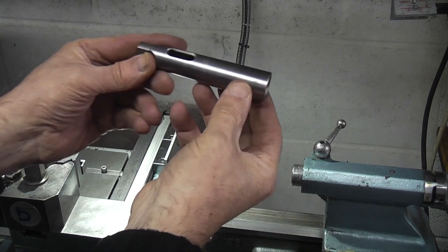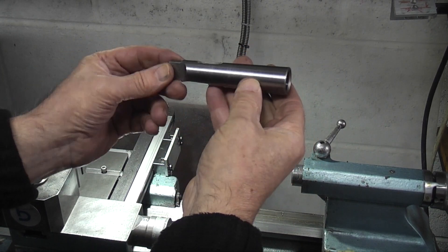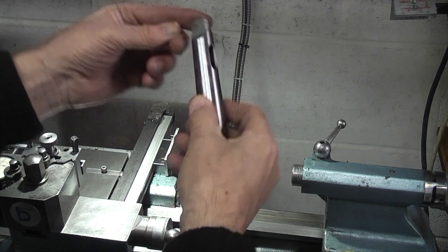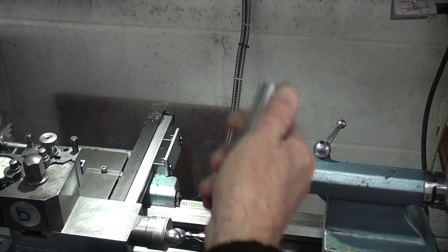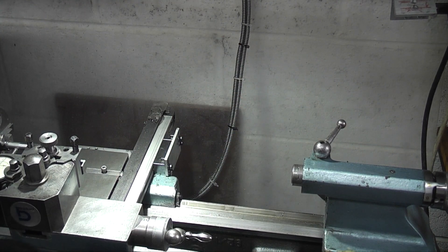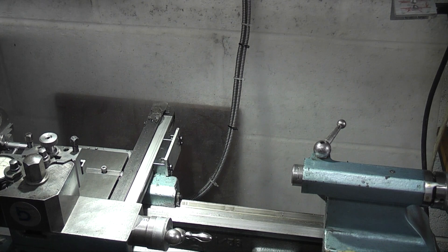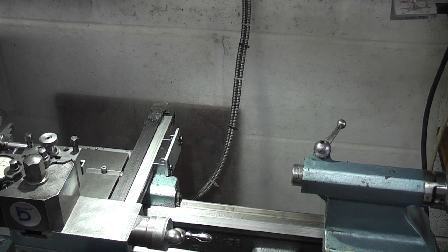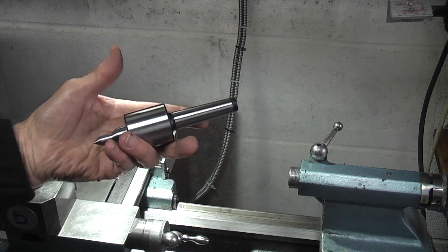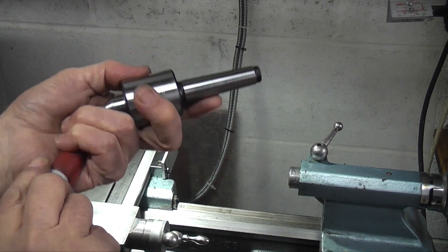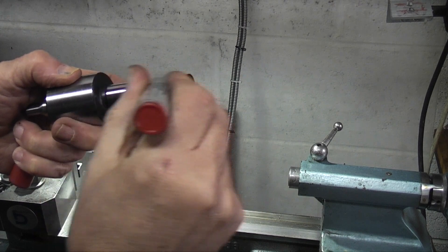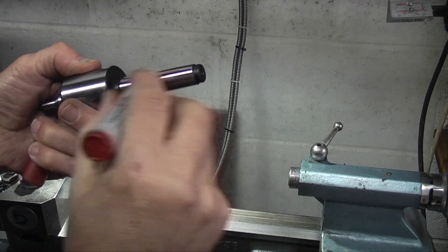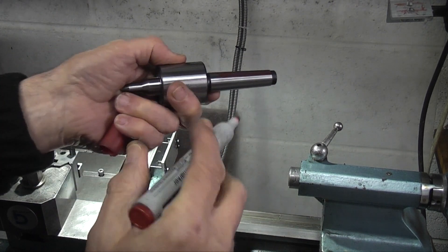I'm using this morse taper adapter number two to three. What I want to do is just check the taper. This is a revolving center that we're looking at. First of all I want to put a red line and red mark on the taper.